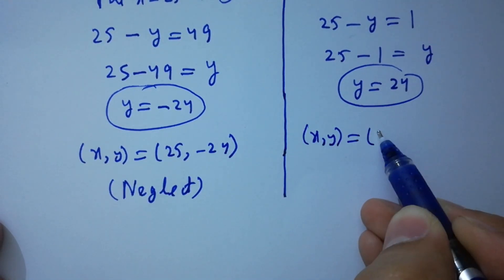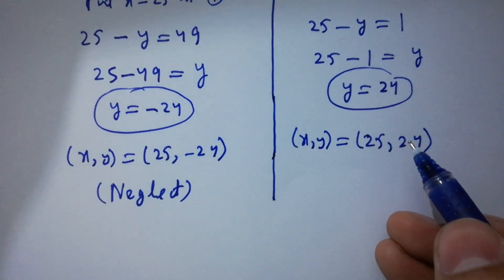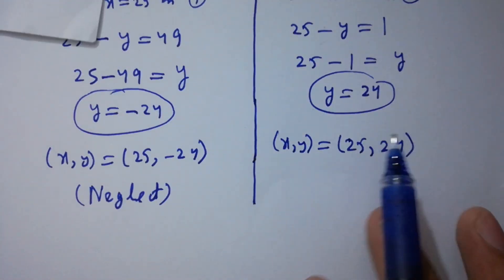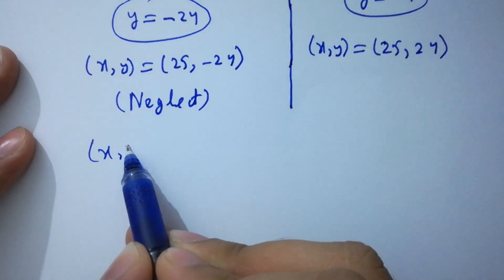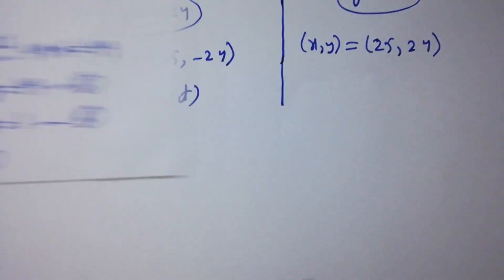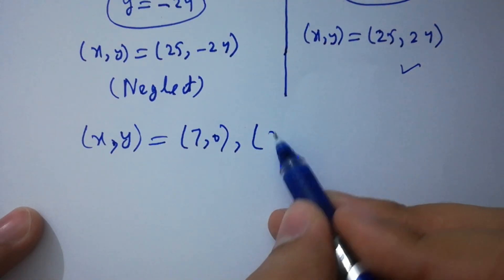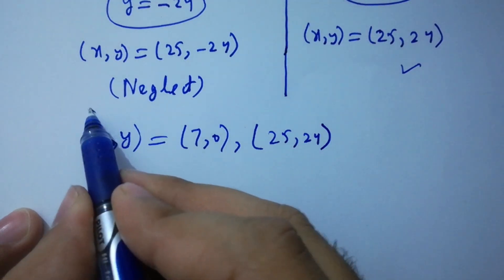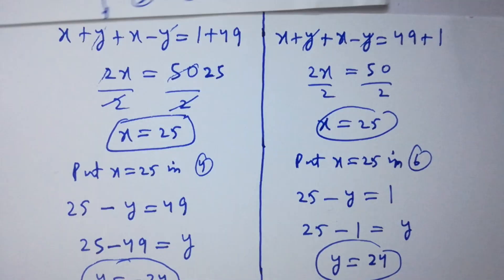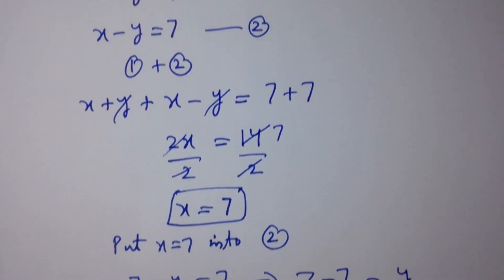So we have two solutions. The first solution is x and y equal to 7 and 0, and the second solution is x and y equal to 25 and 24, which are positive values. Thank you for watching this video. Please subscribe to this channel to get notifications of new videos, and share with your classmates and friends. Bye.